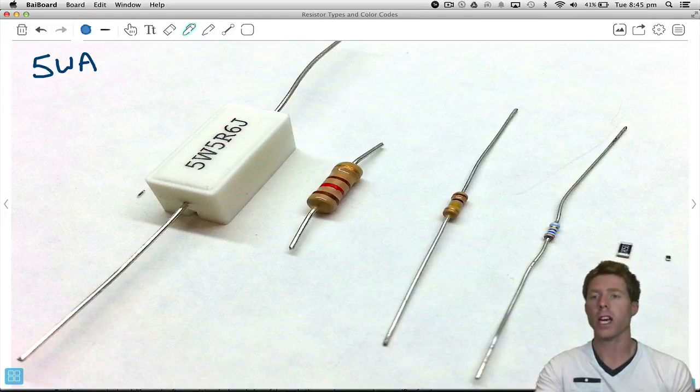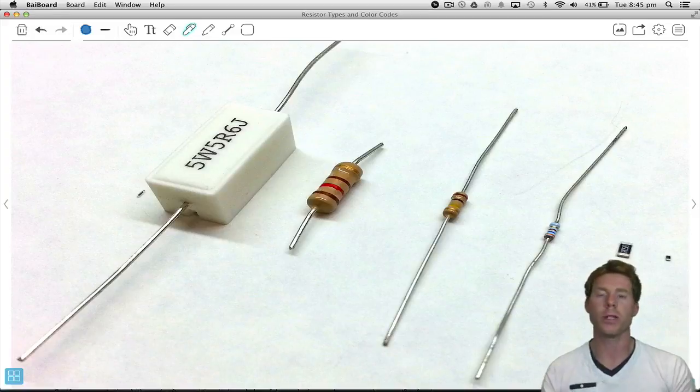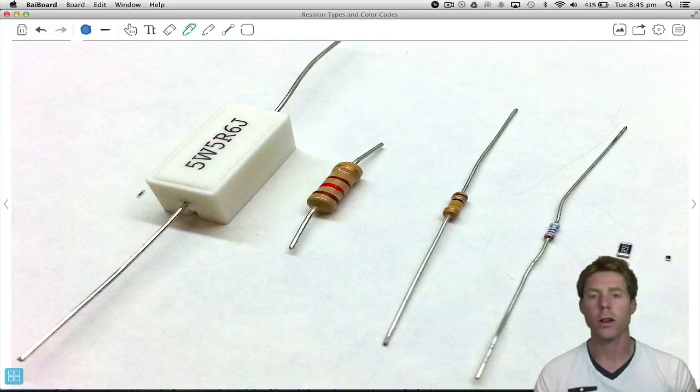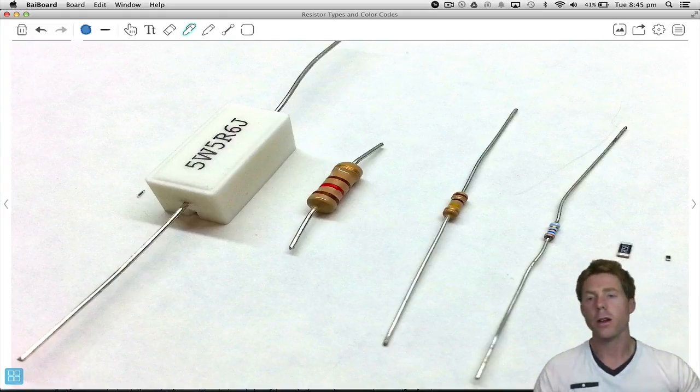My understanding of why they came up with it was because sometimes decimal points can be missed. If you miss a decimal point, then the value completely changes. However, I haven't had any problem with decimal points before, so I always just use the decimal point.